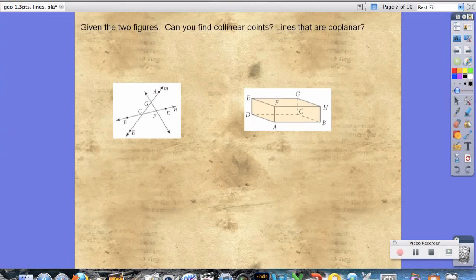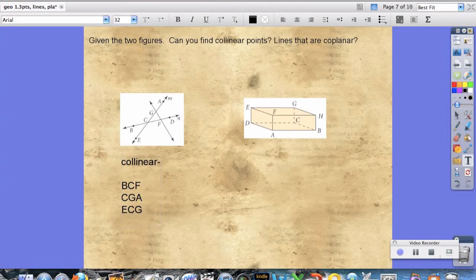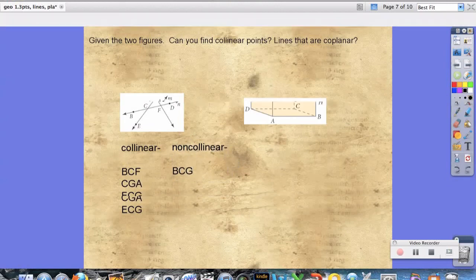So here's some quick examples. The one on the left gives us three lines. It says, can you find any points that are collinear or on the same line? So collinear points that are on the same line. So let's say BCF, those are on the same line. CGA are on the same line. Even ECG are on the same line. To give you an example of non-collinear, we have BCG. Notice B and C are collinear, however, G is not collinear with B. Therefore, those three points are not collinear.